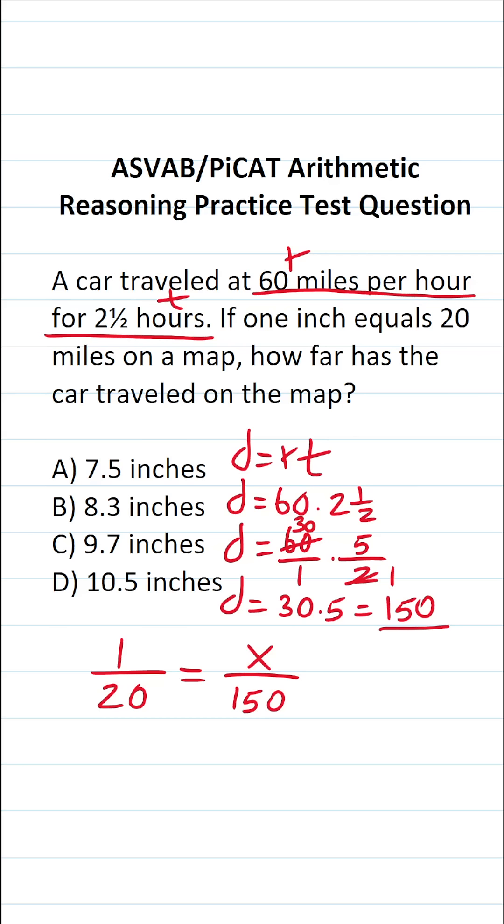You solve proportions via cross multiplication. We have 20 times X, which is 20X equals one times 150, which is 150. To get X by itself, we're going to divide both sides of this equation by 20. This crosses out, leaving us with X over here. Cross out these corresponding zeros. 15 over two is 7.5.